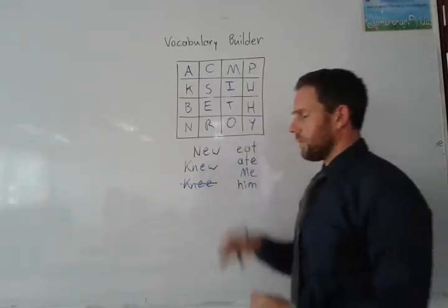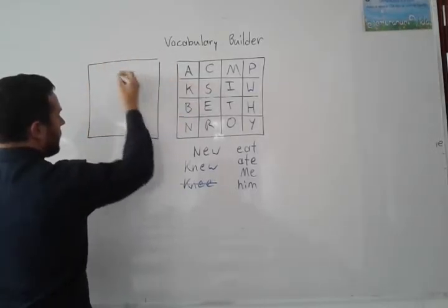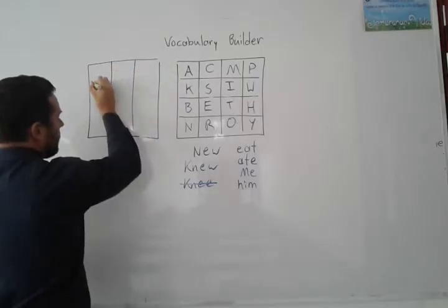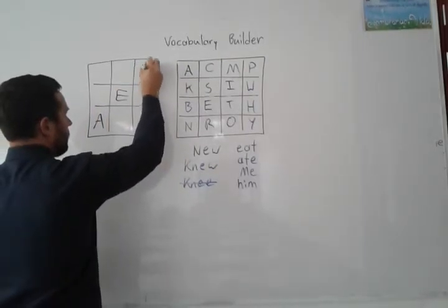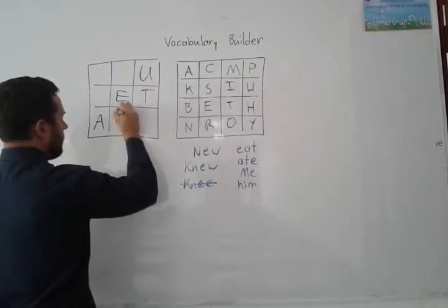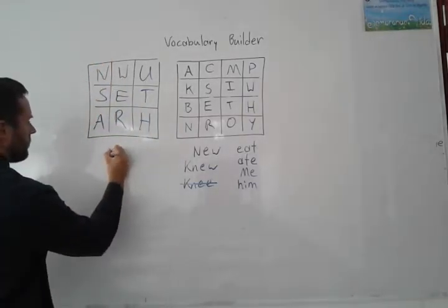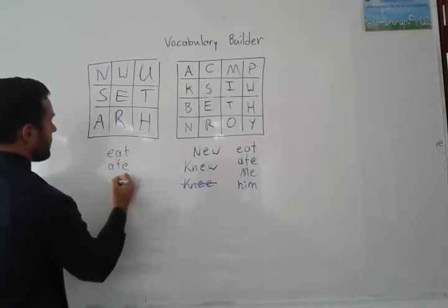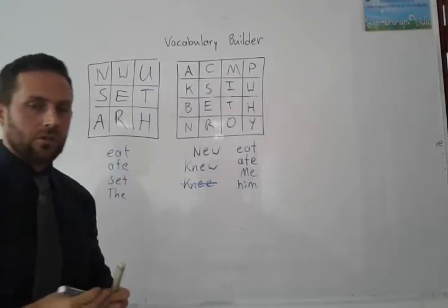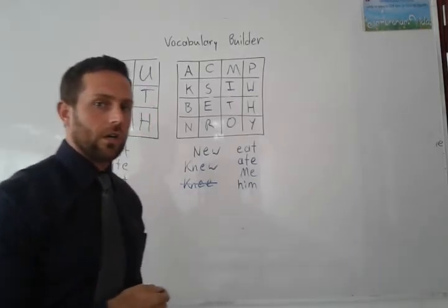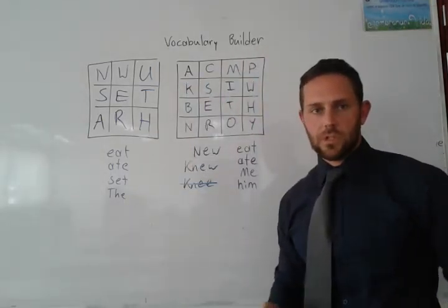Another idea is you can have two groups doing separate tables. You have one table here, and the other group — maybe a more advanced group — can have a table of just nine letters: A, E, U, T, R, S, W, H, N. Create words with these. For example: eat, eight, set, the. So this is one game that you can use in class. I hope this video helped. If you have any questions or ideas, please put a comment down below. Gracias por compartir este video. Have a good day.